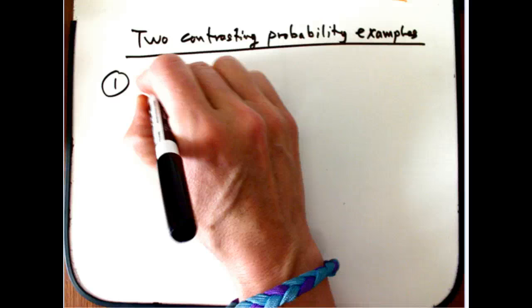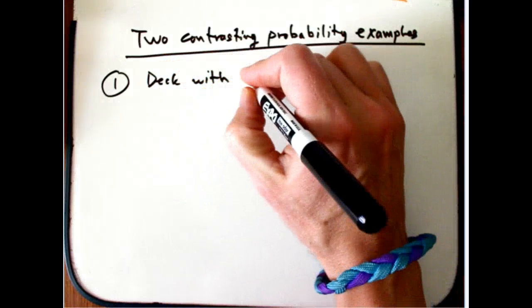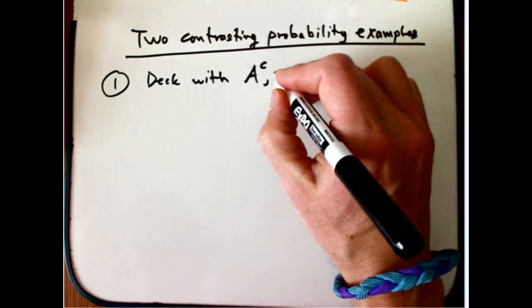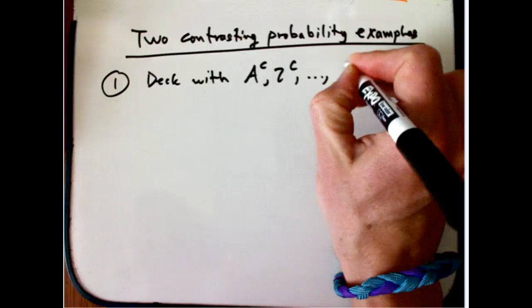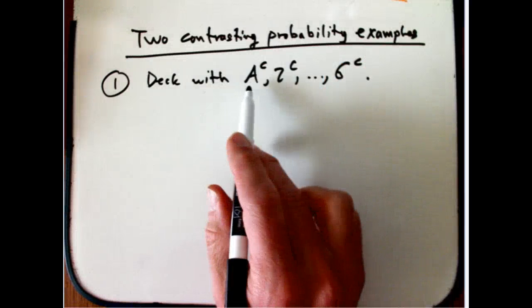I've got a very small deck of cards. I've got a deck with just the ace of clubs, that's how I denote ace of clubs, two of clubs through six of clubs. It's just six cards. They're all clubs. And the ace here I'm thinking of as a one.